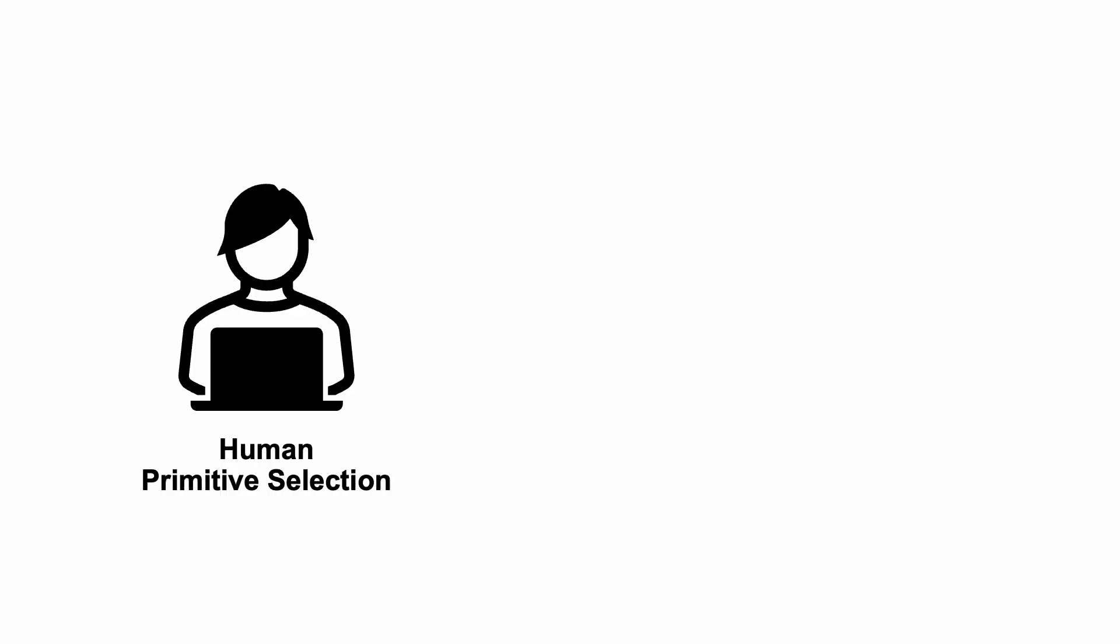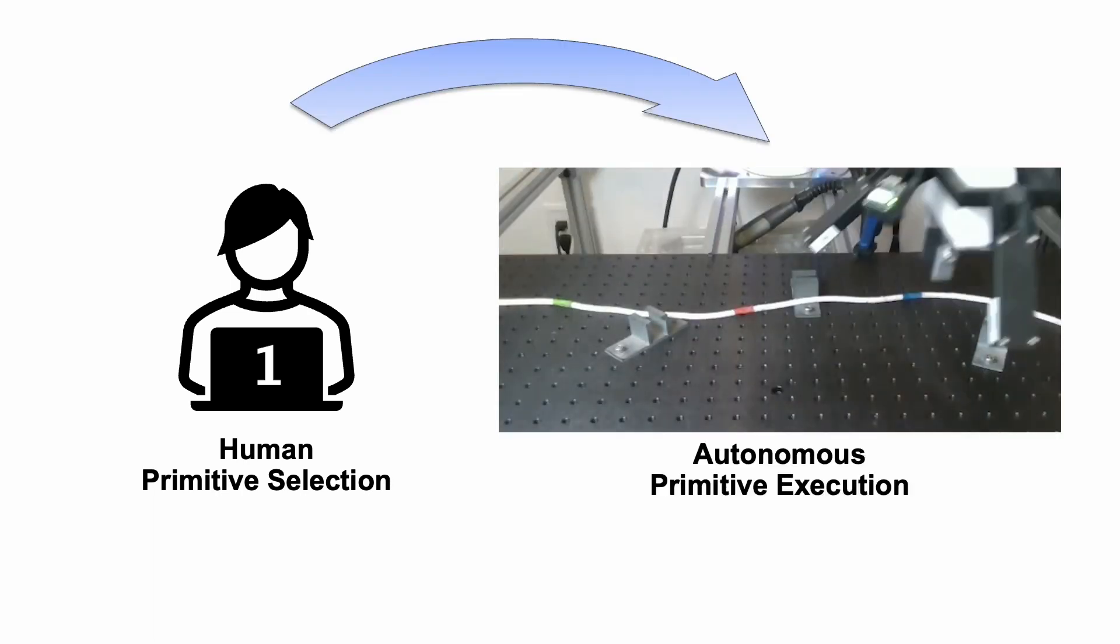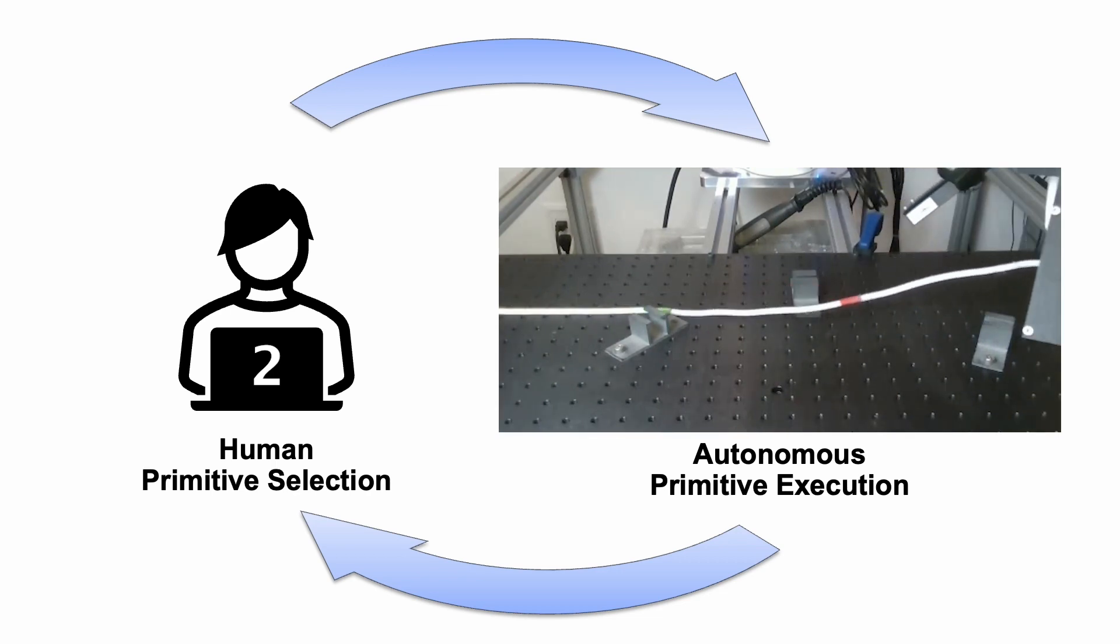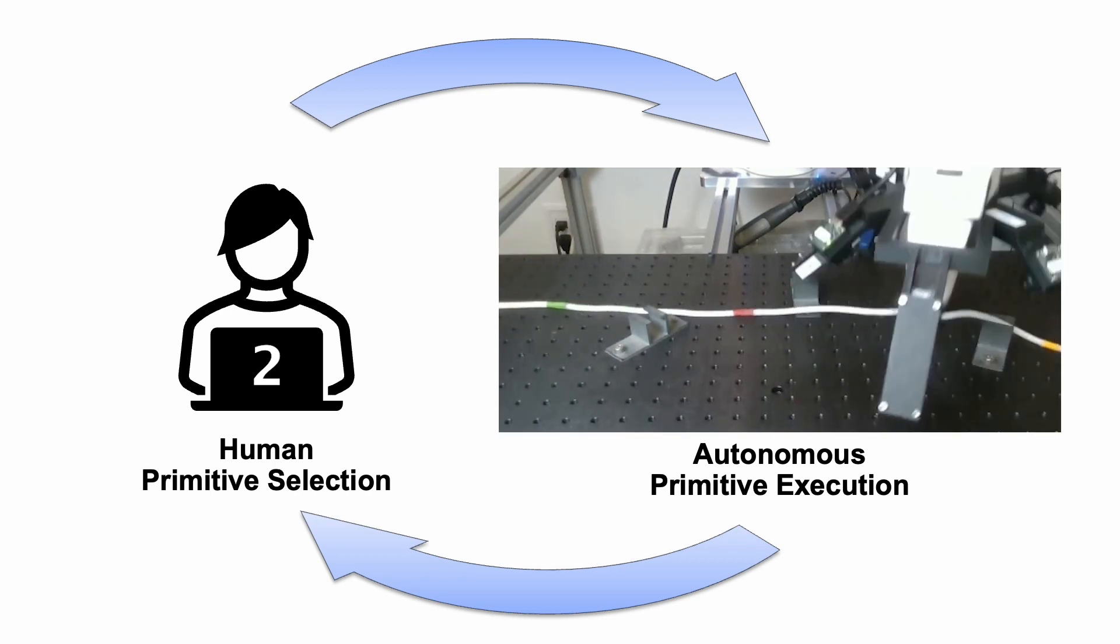We collect demonstration data for the high-level policy after the primitives have been trained. The human expert will input the desired primitive, wait for the robot to execute autonomously, then enter the next primitive. Repeat this until all clips have been routed and the trajectory is complete.